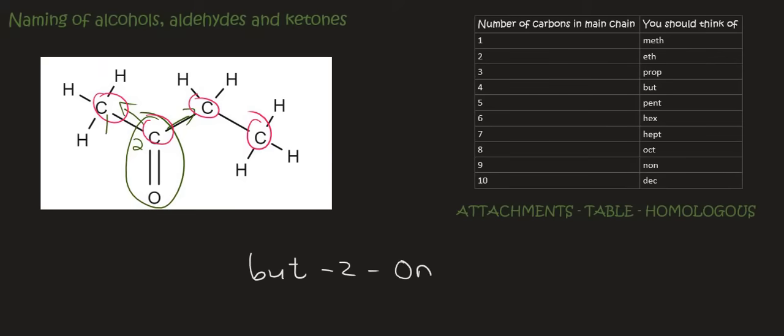Then it's on carbon number 2. So we're going to say 2. Now ketones we use the name one. And that makes sense, there's a one over there. So I know there's a lot of different things I'm showing you guys. But with practice you'll see it becomes quite easy.